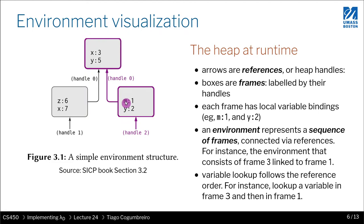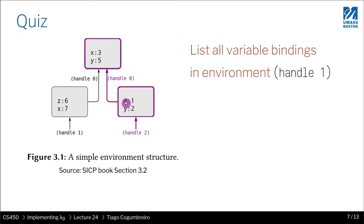So as a quiz now, try to list—look at handle 2, not handle 1—the thing in purple. List all variables that are visible in this environment, the whole thing, the one that is pointed by handle 2. You can do handle 1 as well, so maybe try to list them all and then go back a few slides to see the answer.